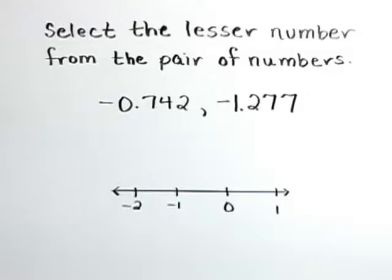Select the lesser number from the pair of numbers: negative 0.742 and negative 1.277.